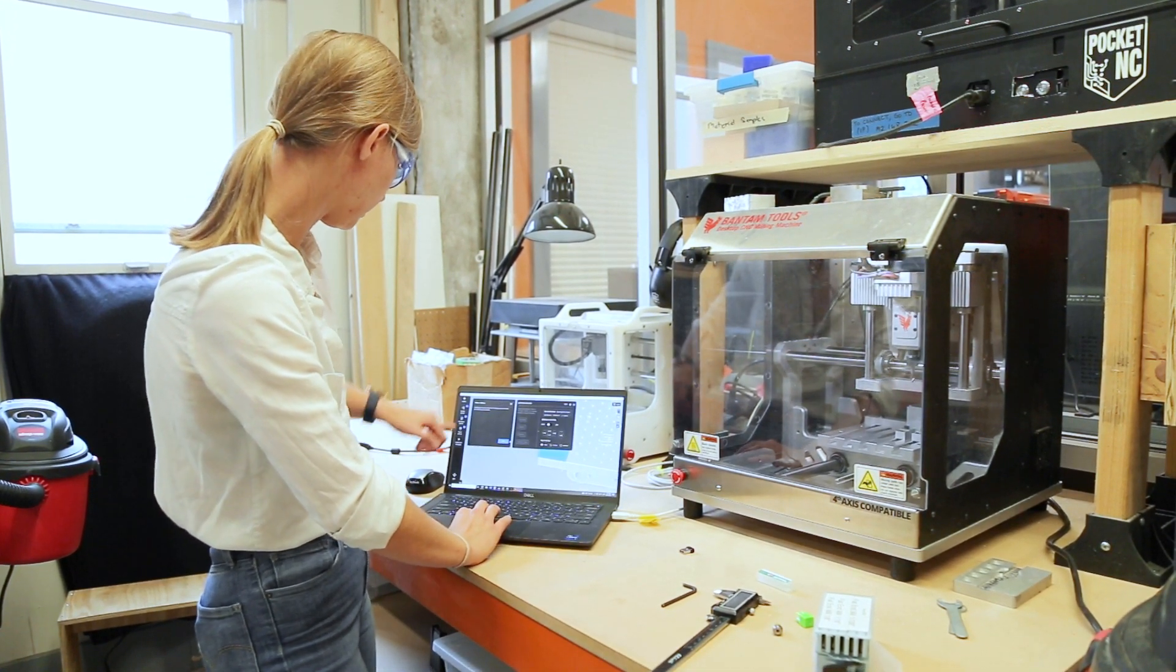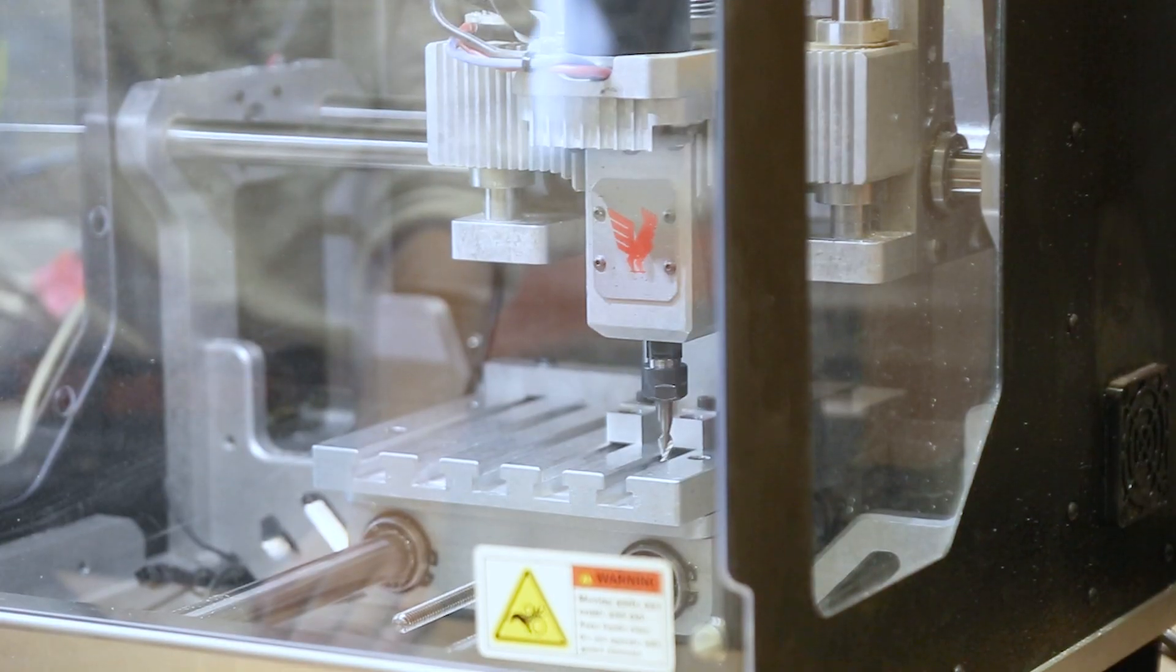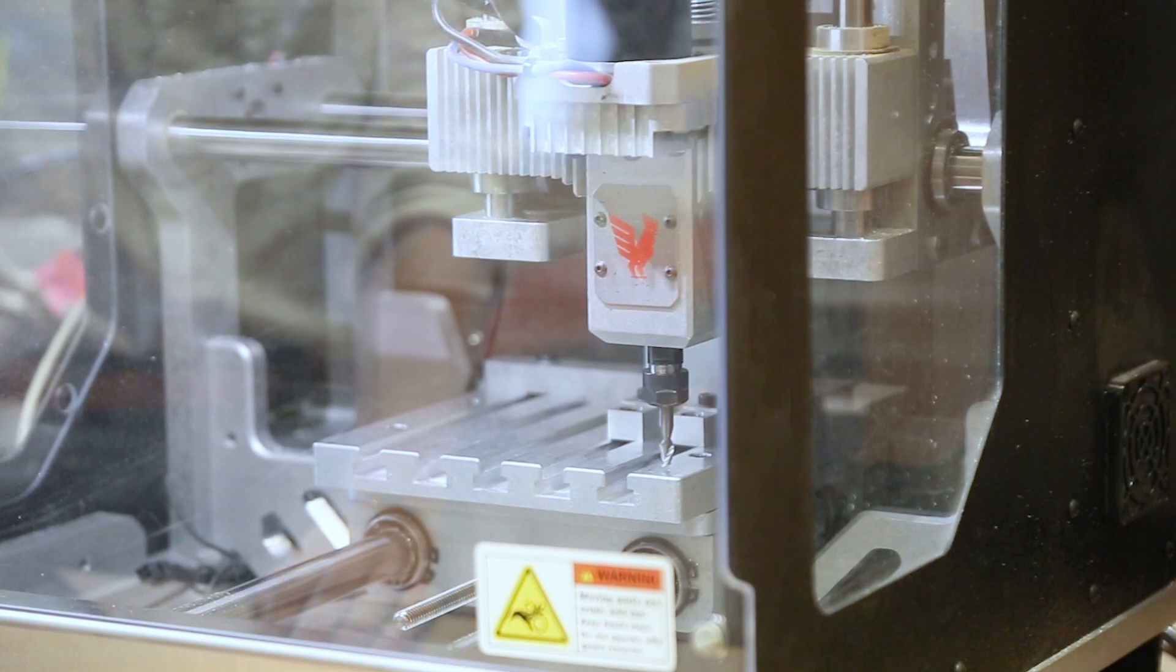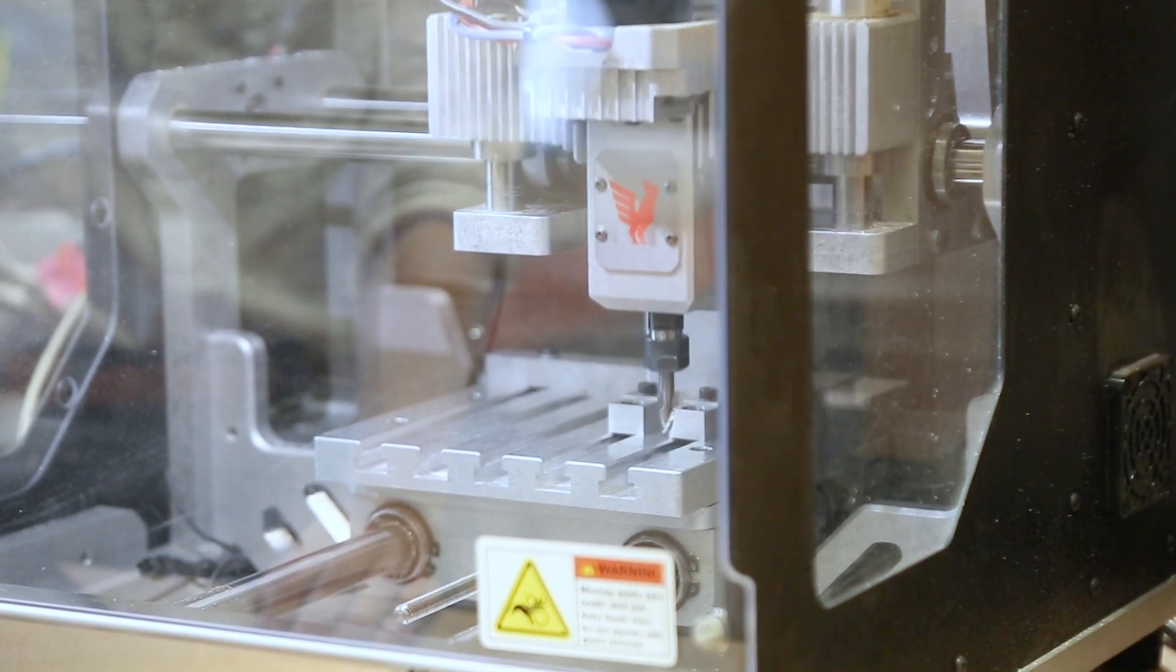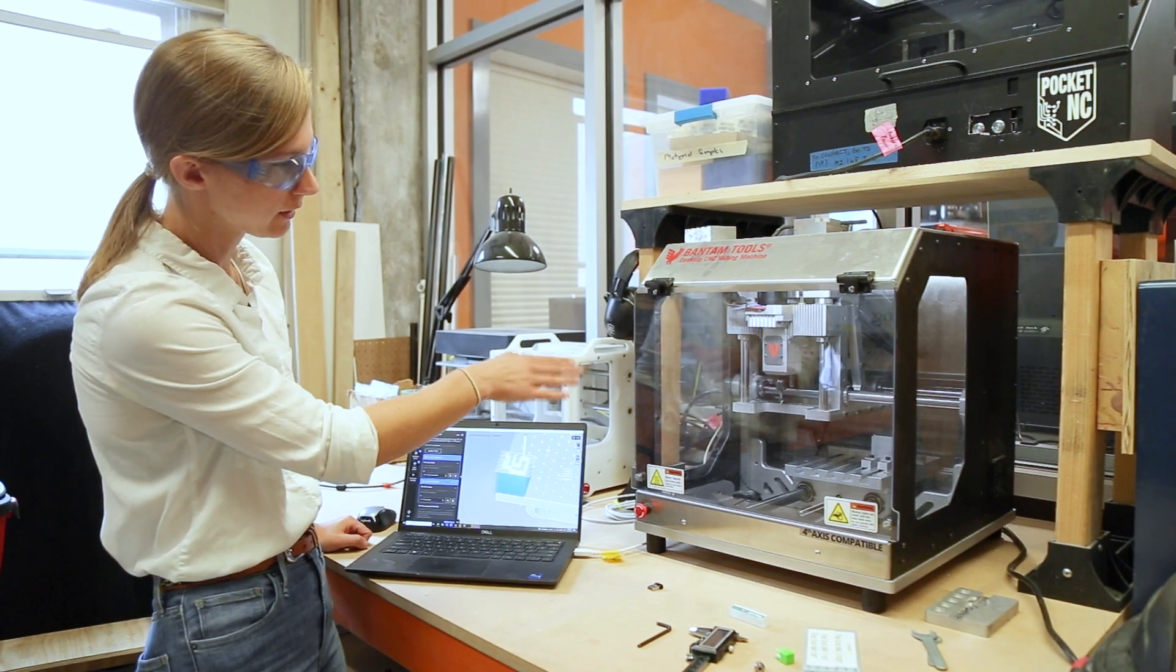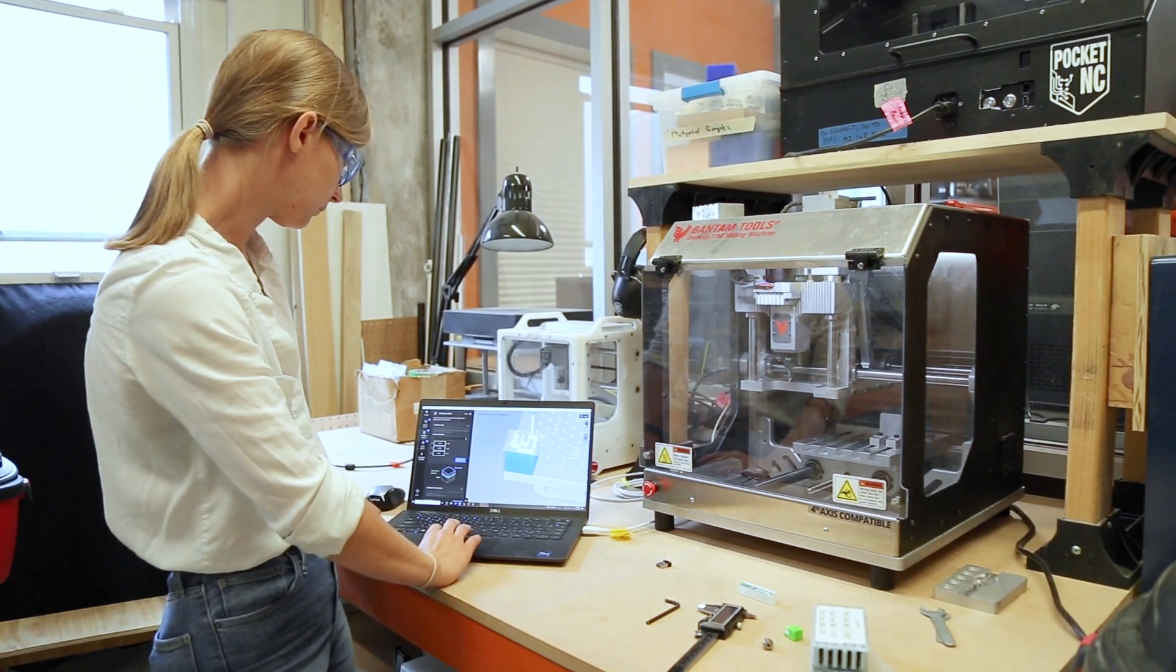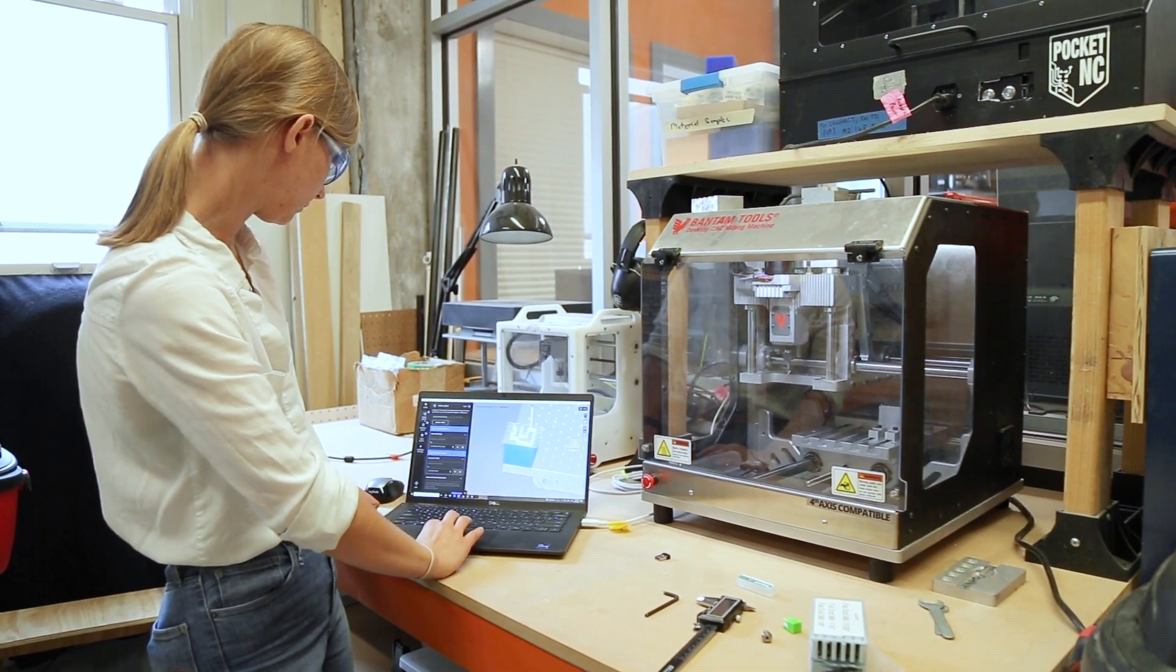We need to start and do what's called a touch-off, and so we'll see it's gonna go straight down until it taps on the aluminum bed. There we go. Now it knows what type of tool it has in there and how long that tool is. Now we're gonna move ahead here to where our material is set up.